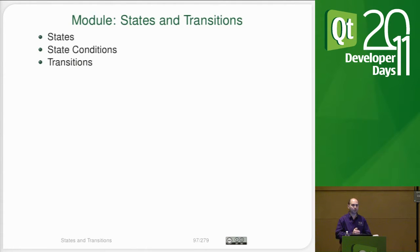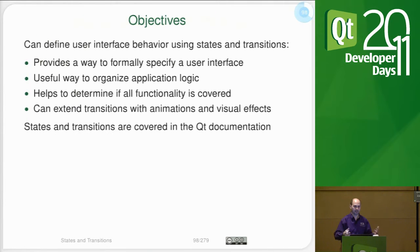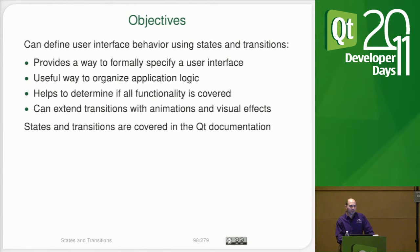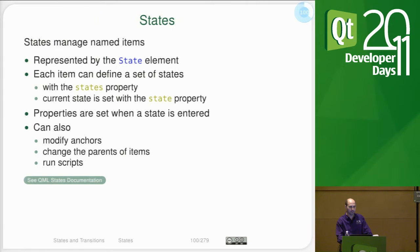You can specify transitions to happen when you change state. For example, the state for a button might be whether it's pressed or not. The state for your whole application might be whether you're on the settings screen, the home screen, or some sub-application screen. If your user interface maps very well to a state machine, then you're going to be very happy with QML, because you can use the QML state machine framework to treat your GUI as a state machine and write very short code.